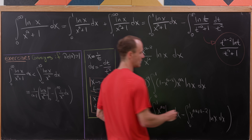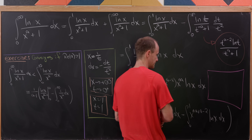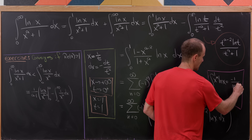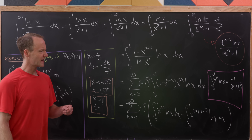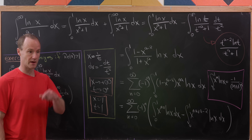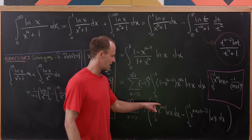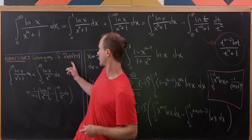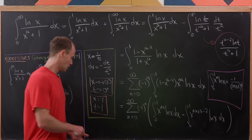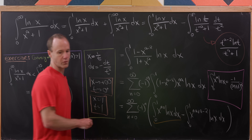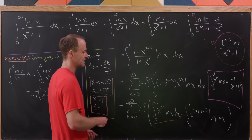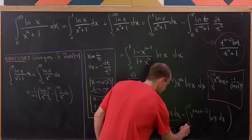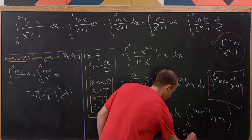We now apply the well-known integral identity: the integral from 0 to 1 of x to the m times the natural log of x equals minus 1 over m plus 1 quantity squared, valid when the real part of m is bigger than negative 1. The exponents here always satisfy this condition given our assumption that the real part of a is bigger than 1. Applying the formula to each integral gives minus 1 over na plus 1 squared, and then minus times minus 1 over na plus a minus 1 squared, which gives a plus sign after the two minus signs cancel.